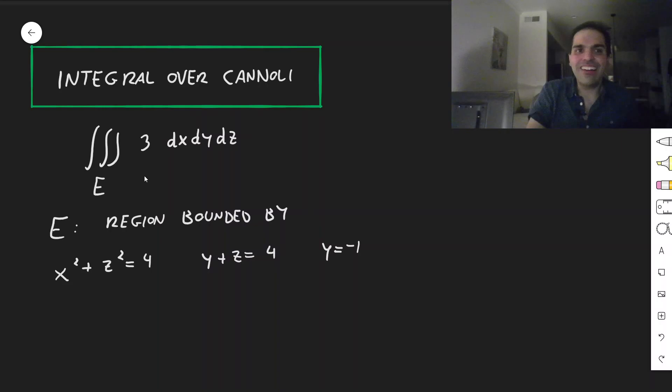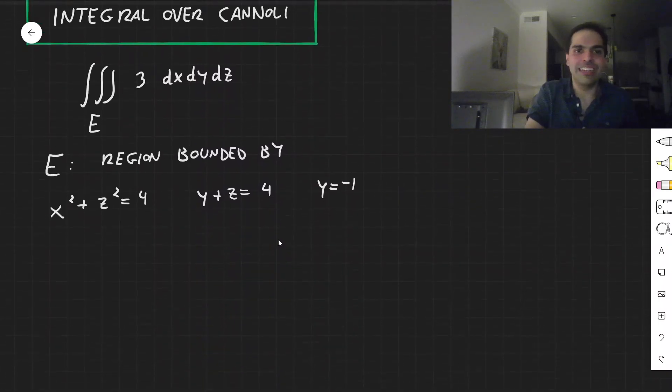In particular, let's calculate the triple integral of the function 3 over the region bounded by x squared plus z squared equals 4, y plus z equals 4, and y equals minus 1.